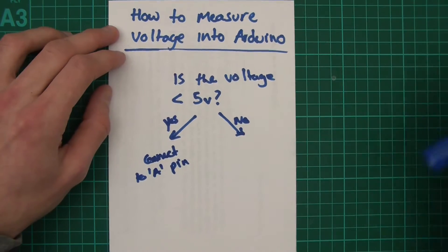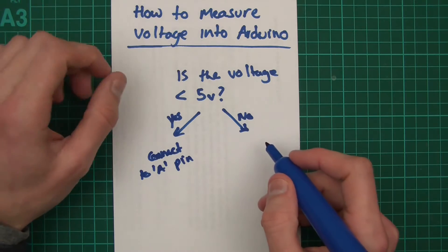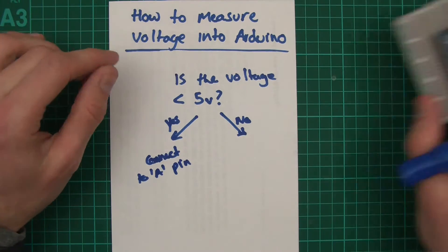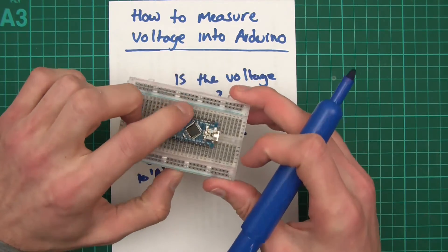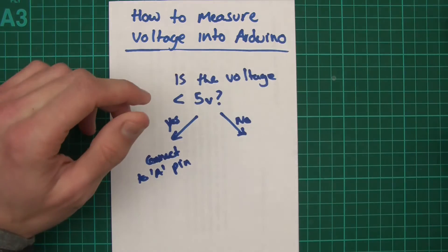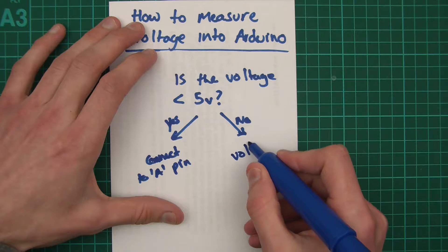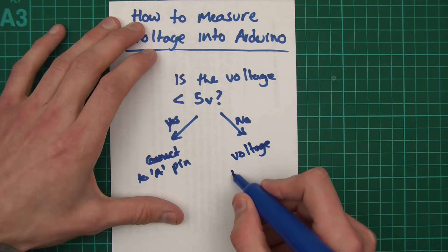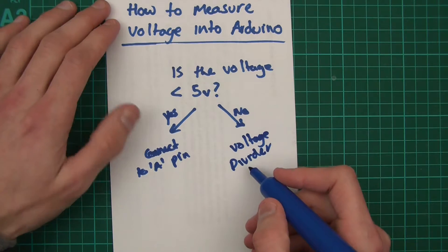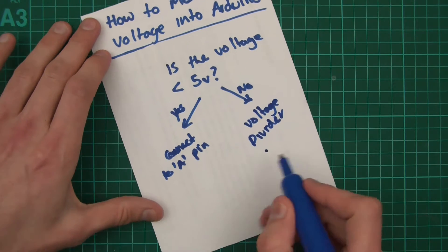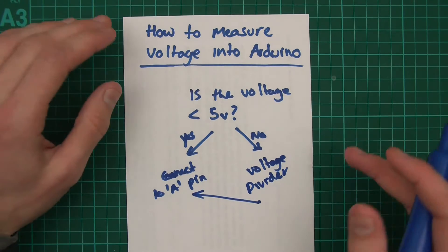What about if no? So if the thing is not less than 5V, then what? Well if it's like a car battery, like I just said, then we've got a bit of a problem. You can't feed 12V into the Arduino analogue pins because it will ruin the Arduino. So what we have to do is use something called a voltage divider. And then after the voltage divider, then we basically connect to an analogue pin and then the thing will work.